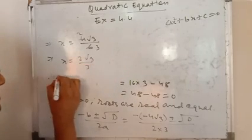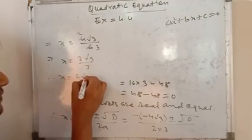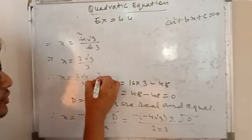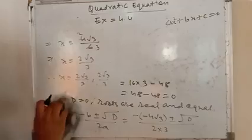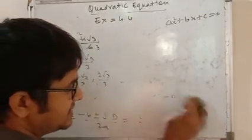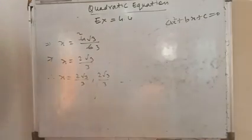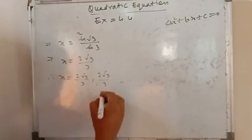That means x equals to 2√3/3, 2√3/3. Why have I written two times? Because the roots are equal, so they have same roots. So x equals to 2√3/3, 2√3/3. Thank you.